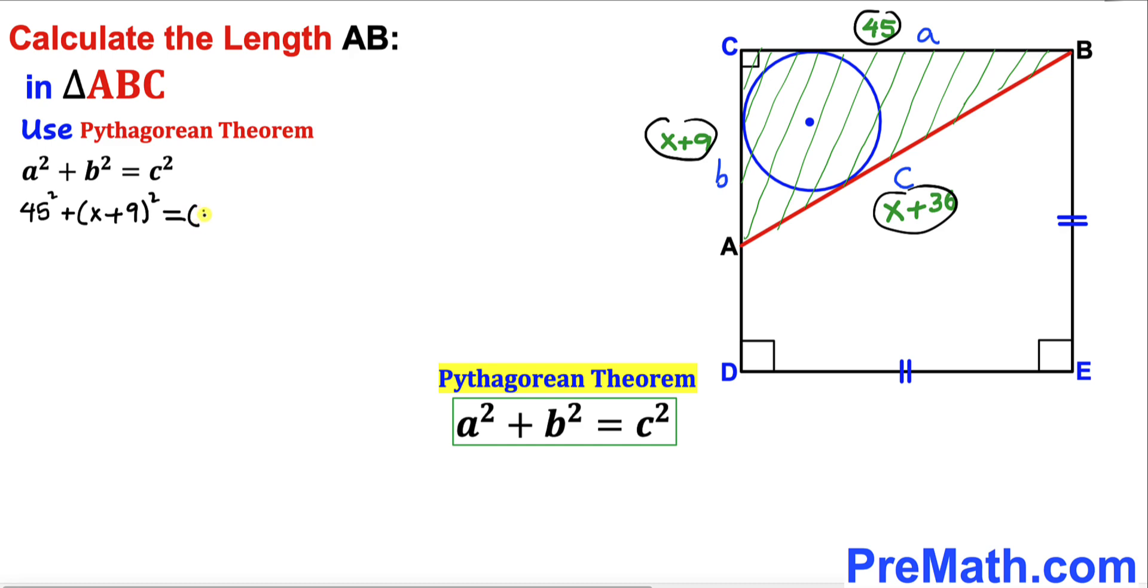Now let's take care of this equation. 45² is 2025 plus...